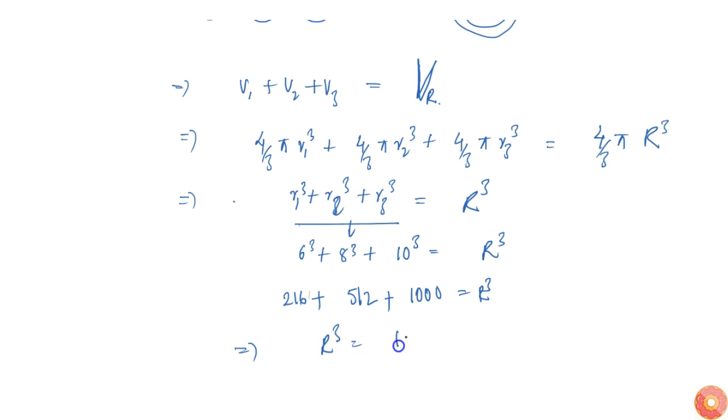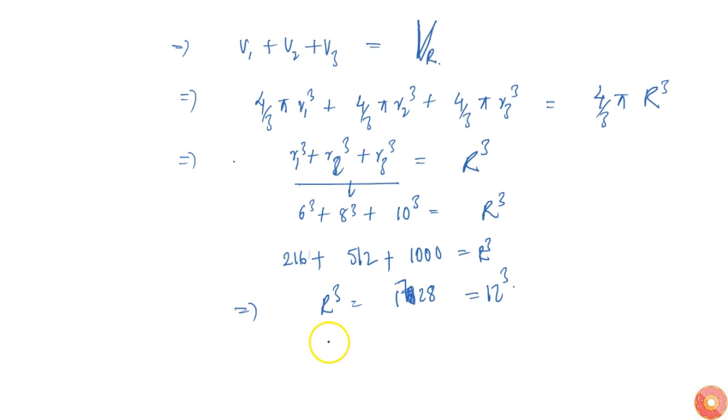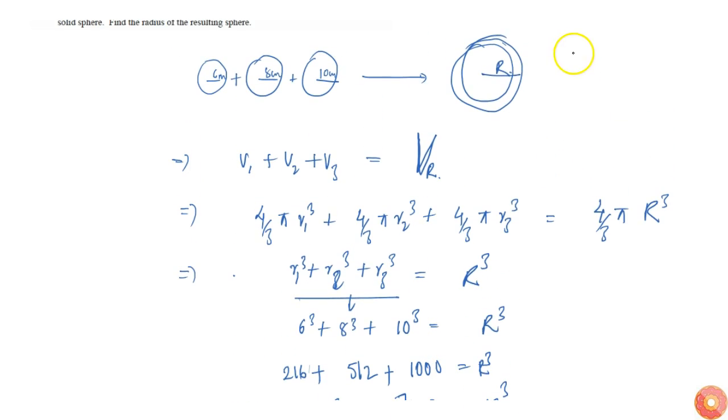R cubed equals 1728, which is simply 12 cubed. Therefore, R equals 12. The radius of the bigger sphere is simply 12 centimeters.